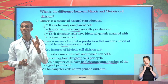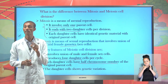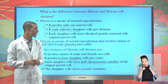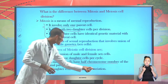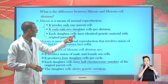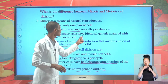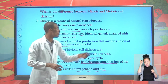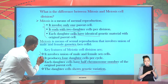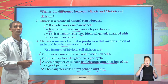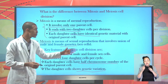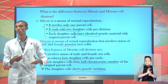If the parental chromosome number is 46, it is reduced by half to 23 in each daughter cell. Each daughter cell shows genetic variation and is not identical to the original parent cell, unlike mitosis. This is the critical feature that differentiates meiosis cell division from mitotic cell division.